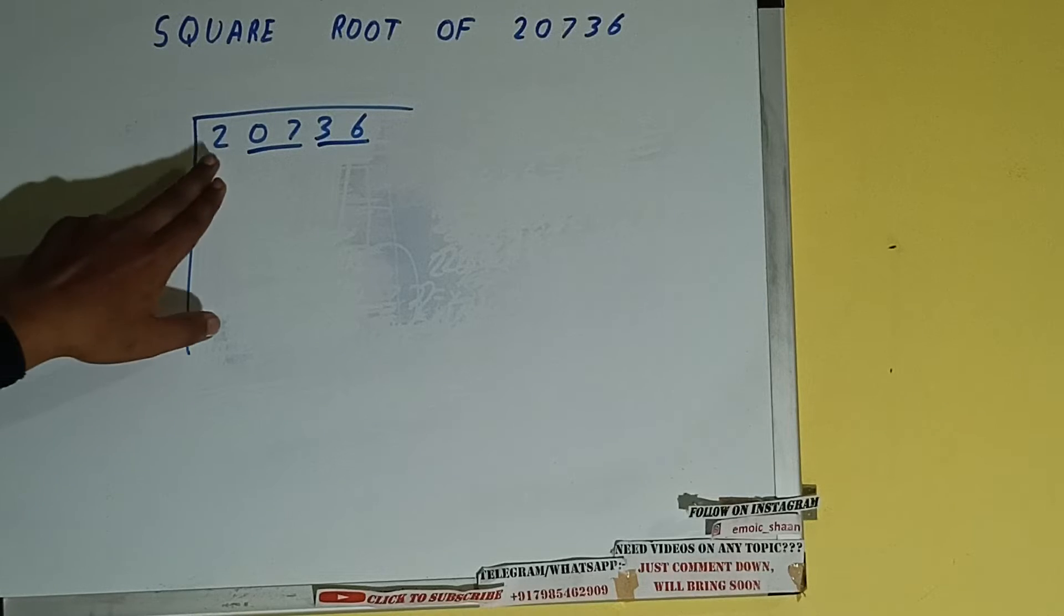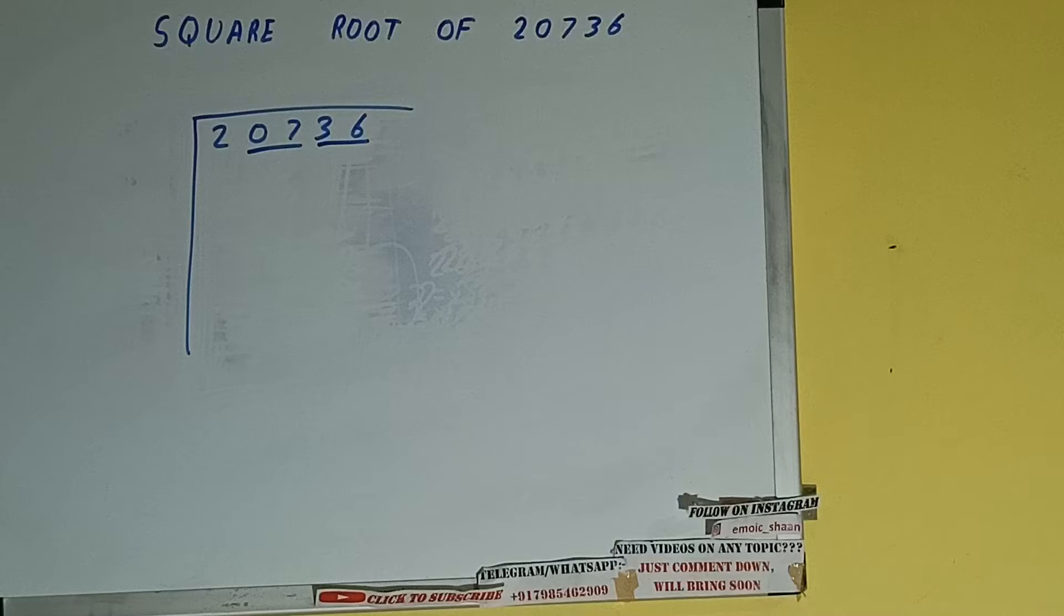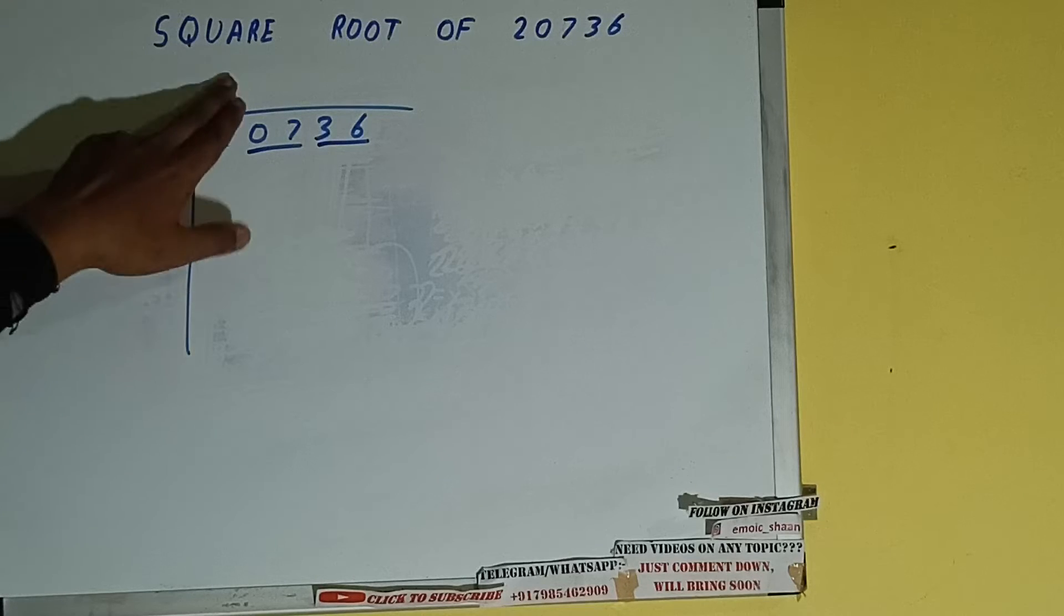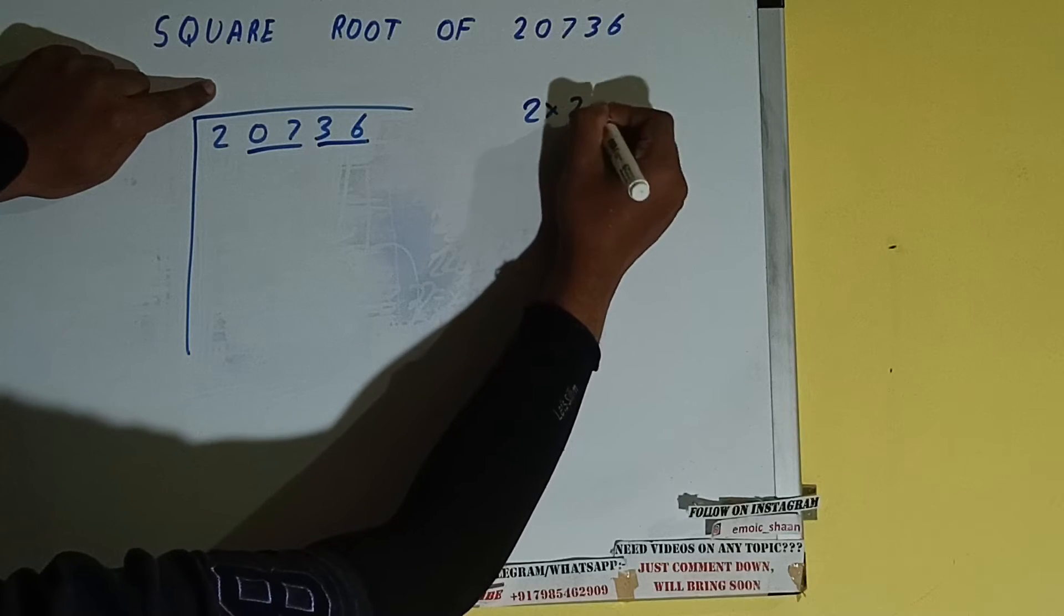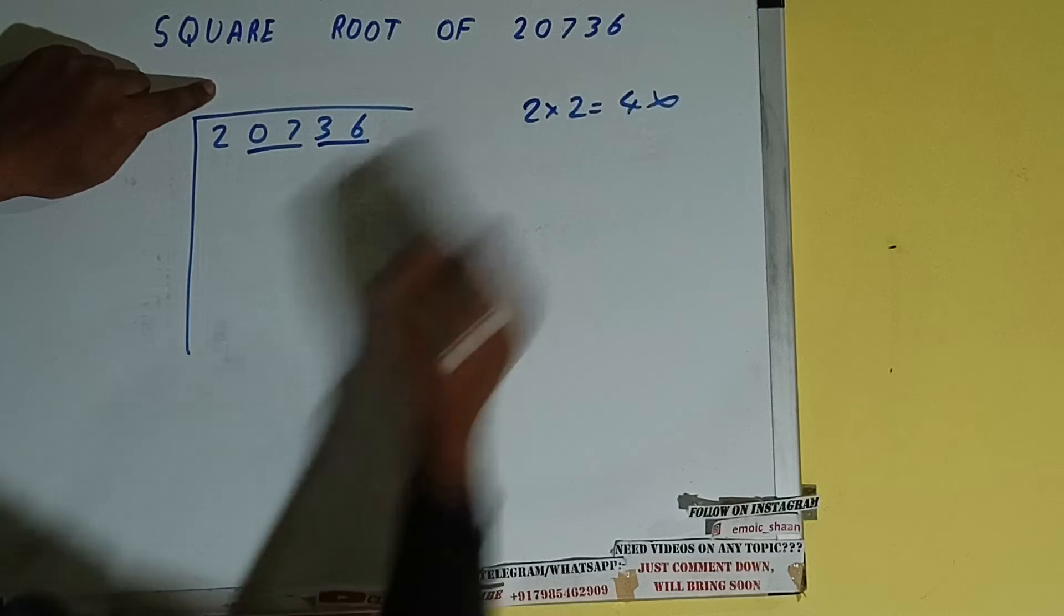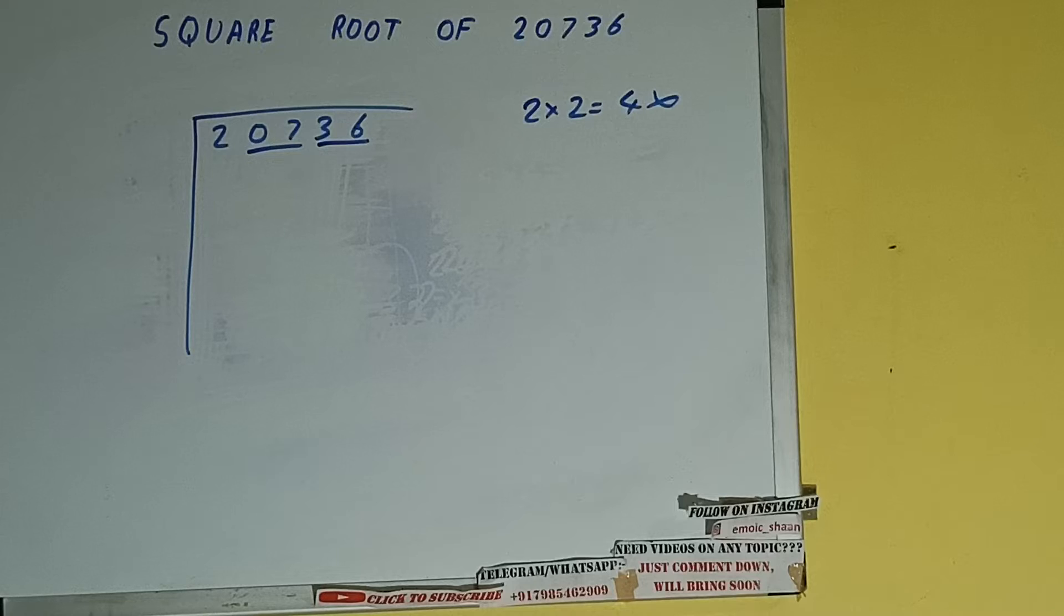So first we'll divide this two and then we'll bring down the pairs. The rule is whatever number we write here we need to write here also, so if we write 2 here and 2 here it will be 4, which is greater than 2, so we cannot take it.